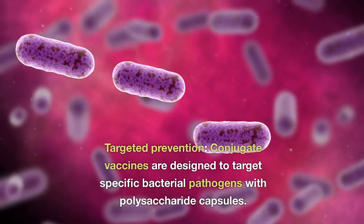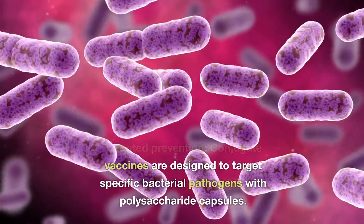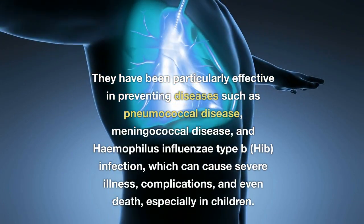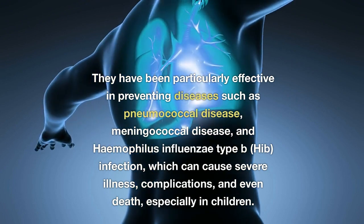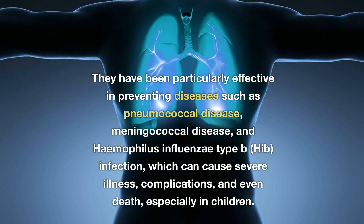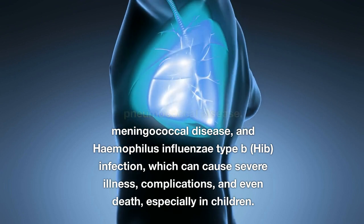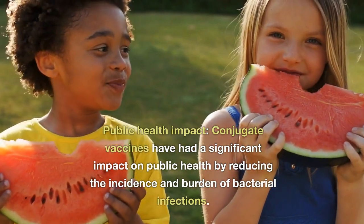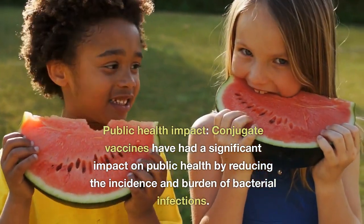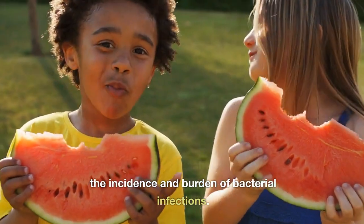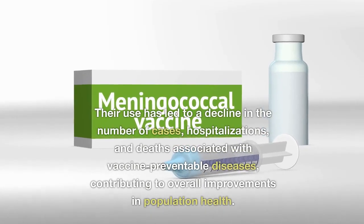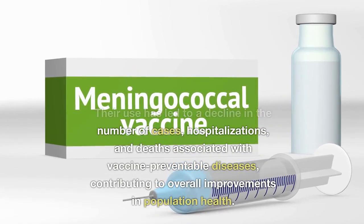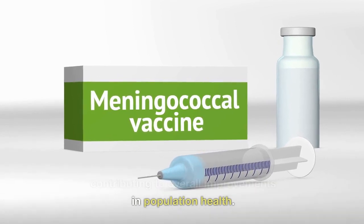Targeted prevention — conjugate vaccines are designed to target specific bacterial pathogens with polysaccharide capsules. They have been particularly effective in preventing diseases such as pneumococcal disease, meningococcal disease, and Haemophilus influenzae type B infection, which can cause severe illness, complications, and even death, especially in children. Public health impact — conjugate vaccines have had a significant impact on public health by reducing the incidence and burden of bacterial infections. Their use has led to a decline in the number of cases, hospitalizations, and deaths associated with vaccine-preventable diseases, contributing to overall improvements in population health.